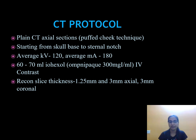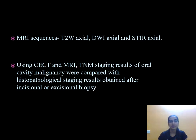CT protocol includes plain CT axial sections with puffed cheek technique, starting from skull base to sternal notch, with 60 to 70 ml iohexol IV contrast. Slice thickness includes 1.25 mm and 3 mm axial and 3 mm coronal sections. MRI sequences include T2-weighted axial, DWI axial, and STIR axial sequences. Using CCT and MRI, TNM staging results were compared with histopathological staging.